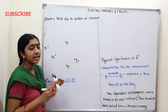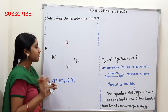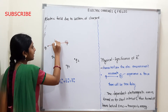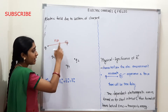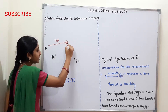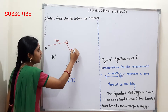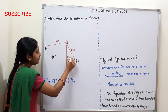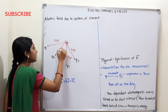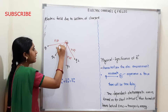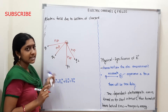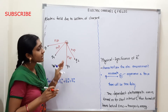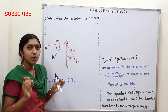There are 4 charges, and this is the electric field. The distance between Q1 and point P is R1P. Next, the distance is R2P. Then, the distance between P and Q3 is R3P. Finally, the distance between Q4 and P is R4P. These are the distances marked.